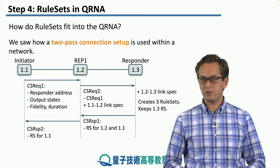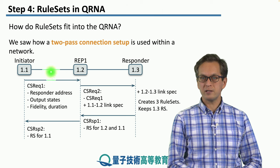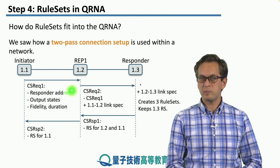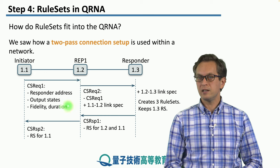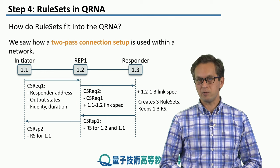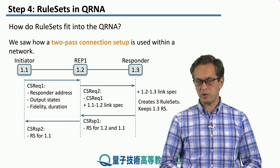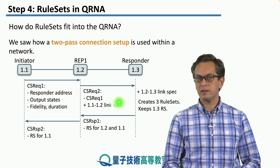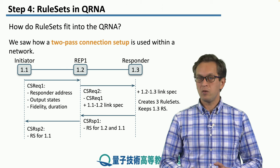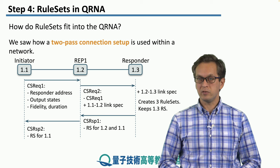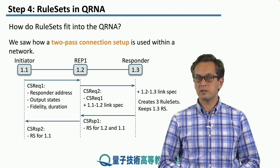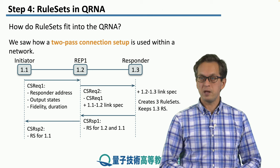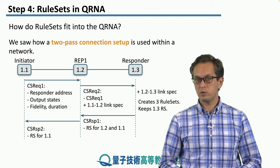This is the image that we had in mind. The initiator creates the connection request — it writes down the responder's address, the output states, the fidelity, and the number of bell pairs that are required, and sends it along the path towards the responder. At each node along the path, we append the link specs for that particular link. Once the responder receives all this information, it generates the required rulesets, keeps its own ruleset, and sends the remainder of the rulesets down the path towards the initiator.